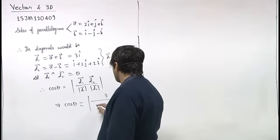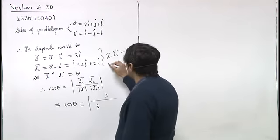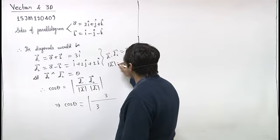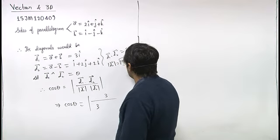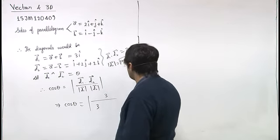Magnitude of d1 is three and magnitude of d2 is also three. It is square root of one plus four plus four, which is three.